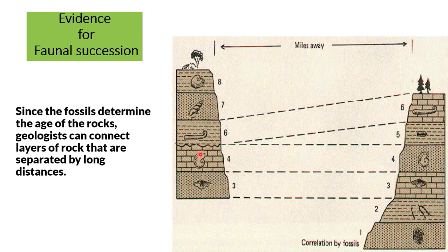We find this fossil on one continent and this fossil on the other continent, and we know that this rock is younger. In some cases, a layer of rock was not laid down, or it was worn away. What could have happened is that this landform might have been exposed and this layer was worn away on one continent, leaving an incomplete record, but it was not worn away on the other continent. Either way, faunal succession can be used to date the age of rock, and then we can correlate that across different continents.